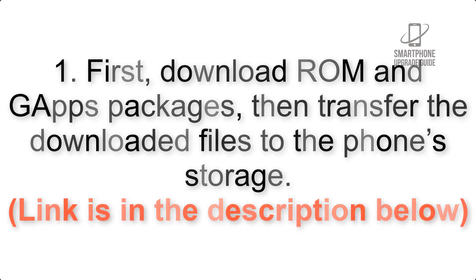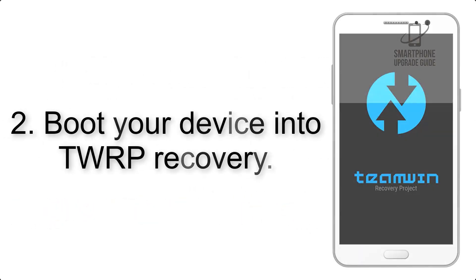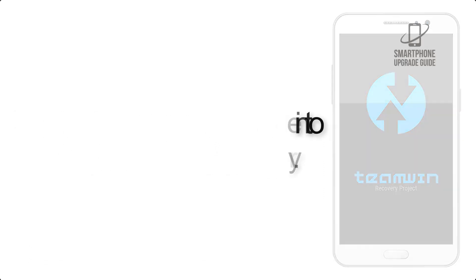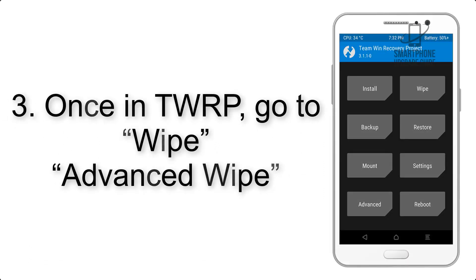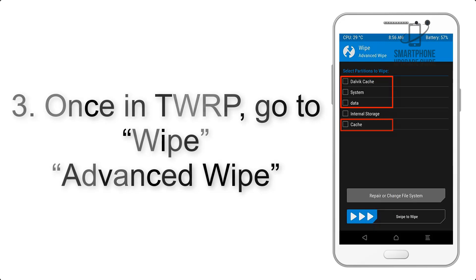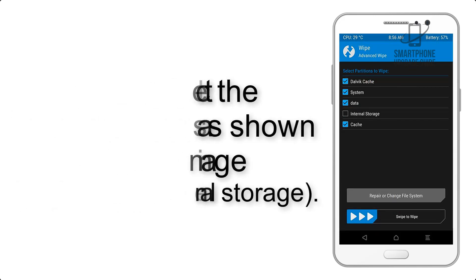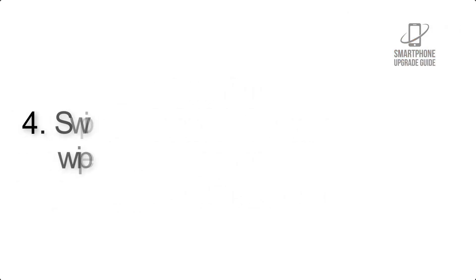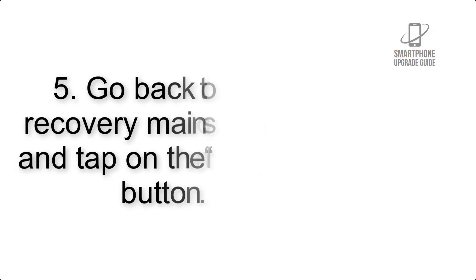Step 2: Boot your device into TWRP recovery. Once in TWRP, click on Wipe, then Advanced Wipe, and select the checkboxes as shown in the image, excluding internal storage. Step 4: Swipe the button to wipe the device.